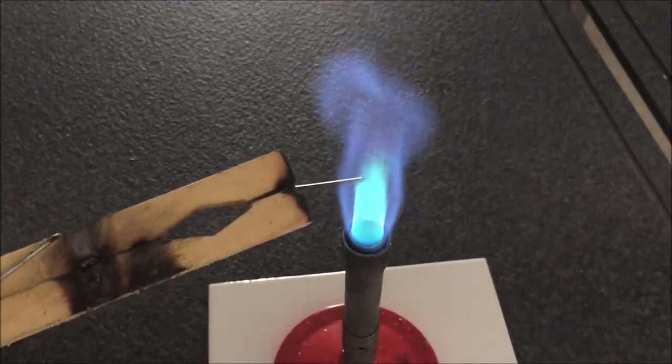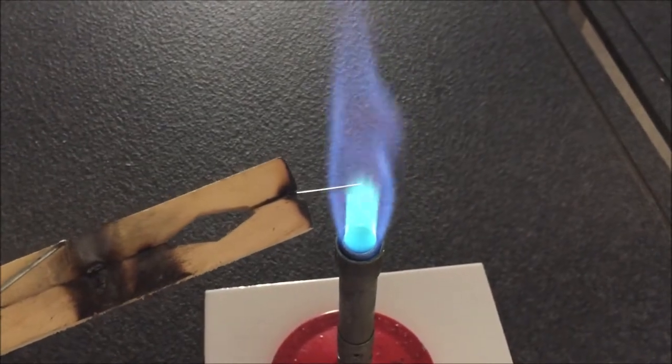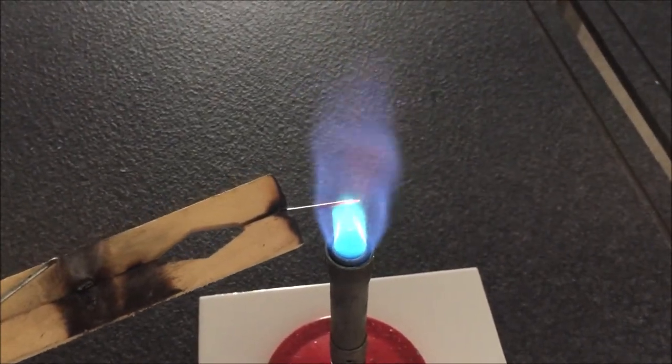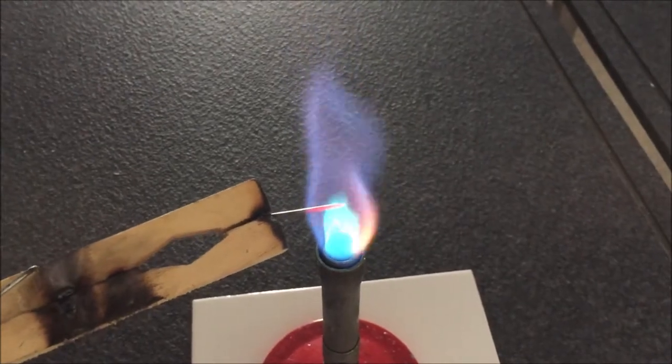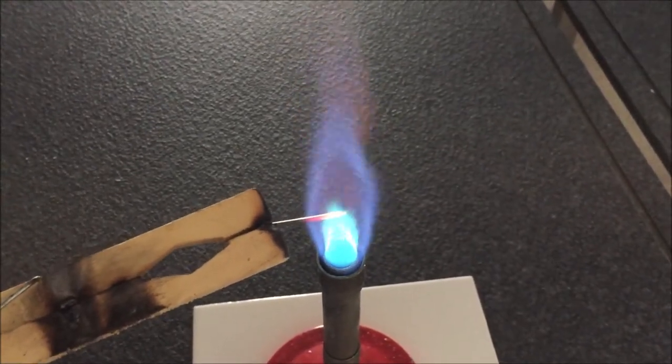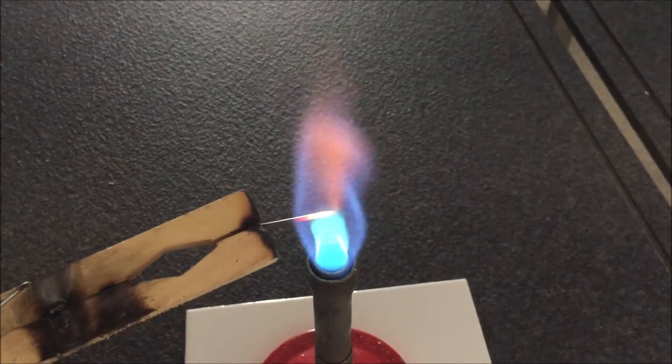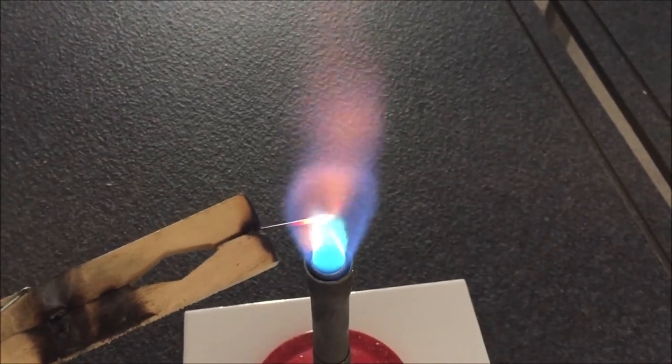you'll see it starts to go a reddish color on the end where it's heating up. There's a trace of yellow and then it's now white, so it's up to about 1500 degrees C.